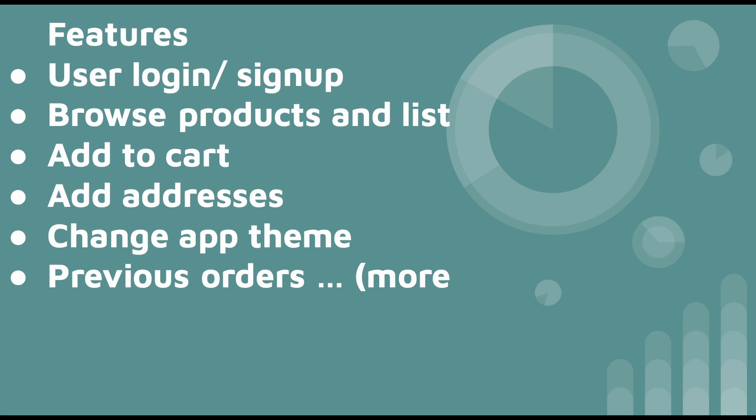The user can login and sign up in the mobile app, and the user can browse and search products based on their requirements. The user can also add products to the cart and add multiple addresses. Bessie also gives a theme switching option — you can switch between dark mode and light mode based on user requirements. We can also see previous orders in the application, and it comes with many other features too.